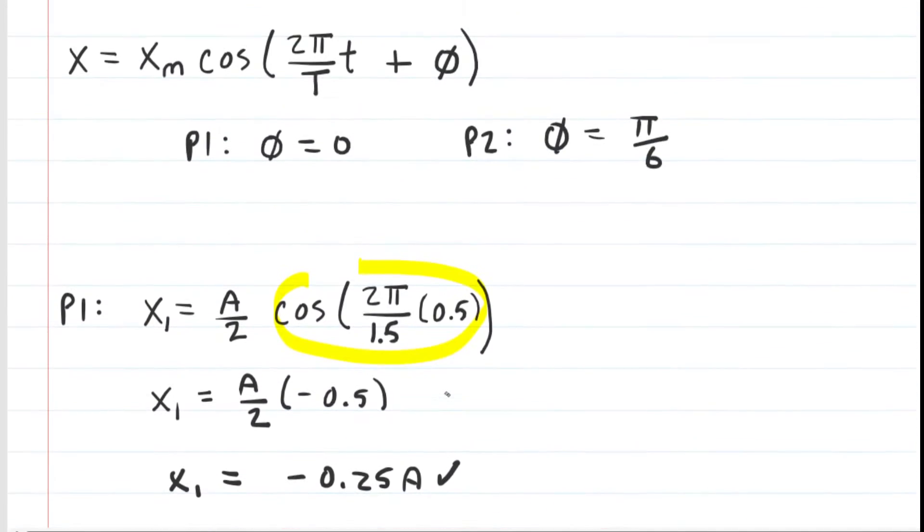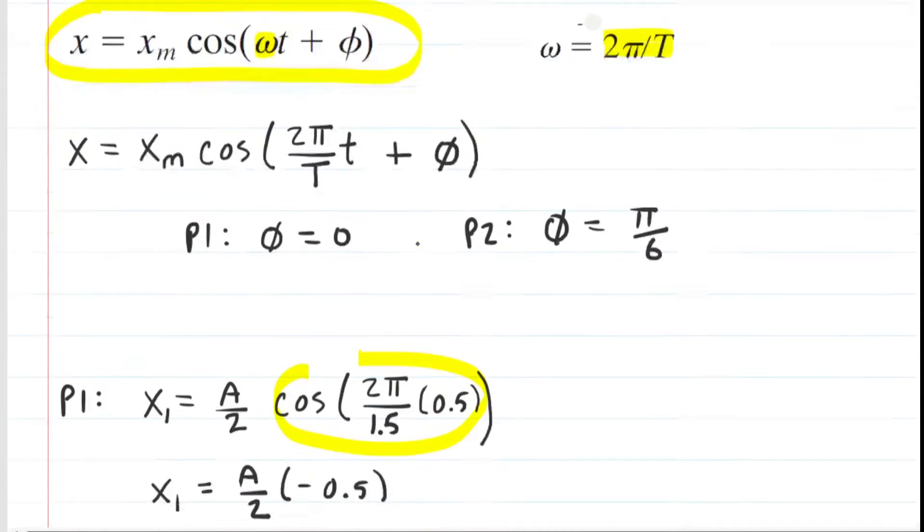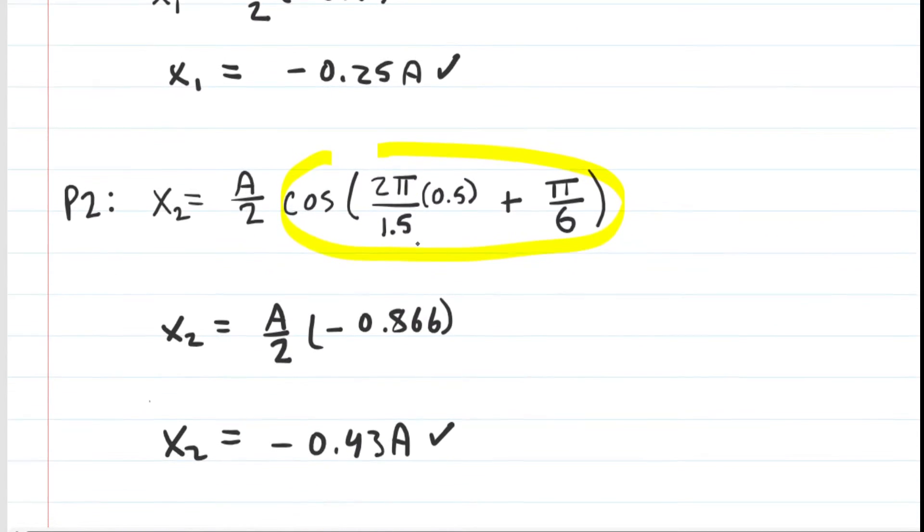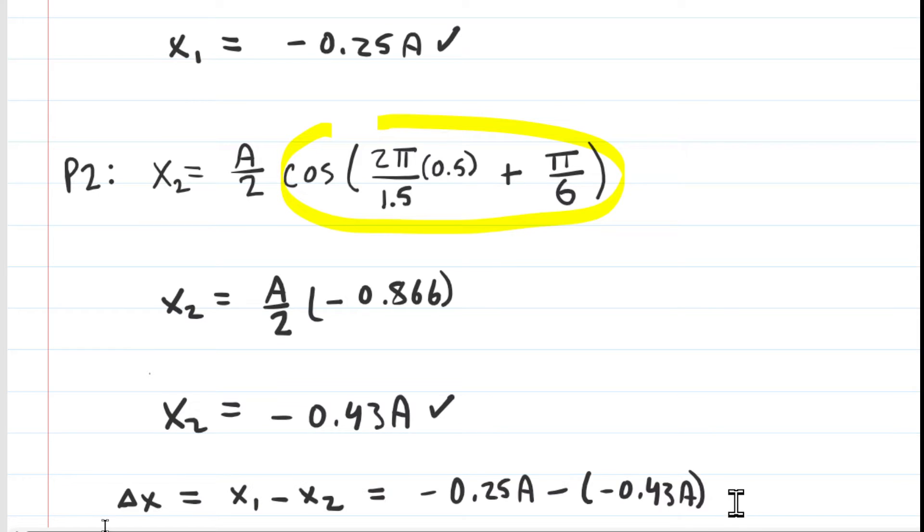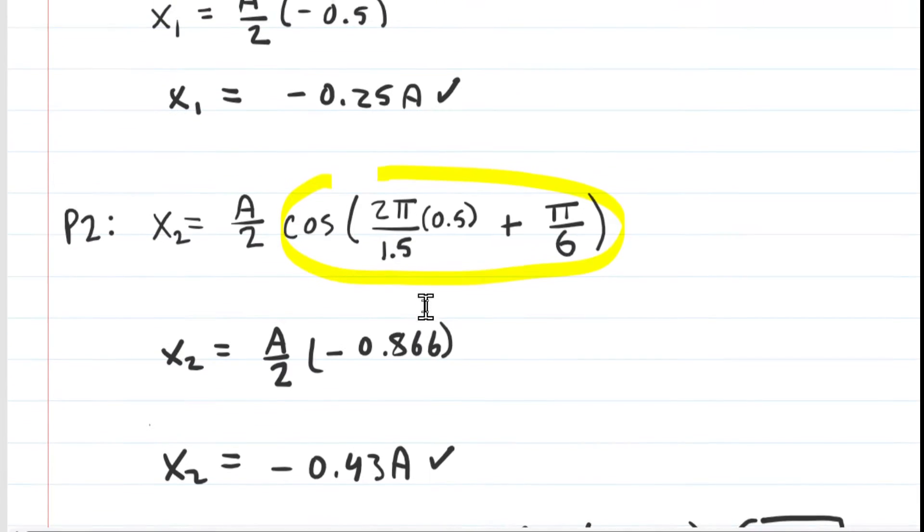Now the question in part A wanted to know how far apart are they in terms of A. So we're basically just going to subtract these two positions. When we do that, we get approximately 0.18A. So this would be the horizontal distance separating the two particles after a period of time of half of a second. That is the correct answer to part A of the question.